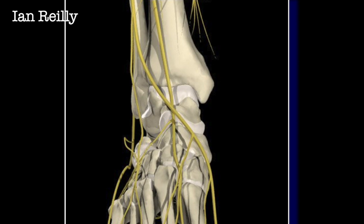In the foot, the two branches are known as the medial and the intermediate dorsal cutaneous nerves. The sural nerve, which you can just see on the lateral aspect of that picture, becomes the lateral dorsal cutaneous nerve. The deep peroneal nerve is what's left, and that supplies the cleft between digits 1 and 2 with skin innervation.